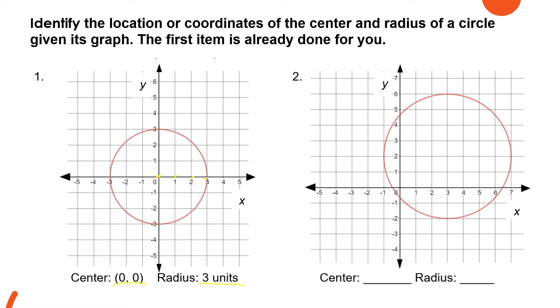We can also count upward or downward from our center. If we count how many units upward from our center, we get 1, 2, and 3. As we all know, all radii in a given circle are equal.